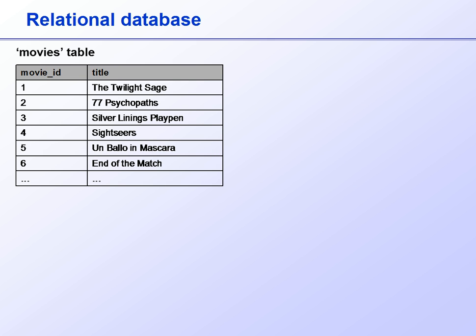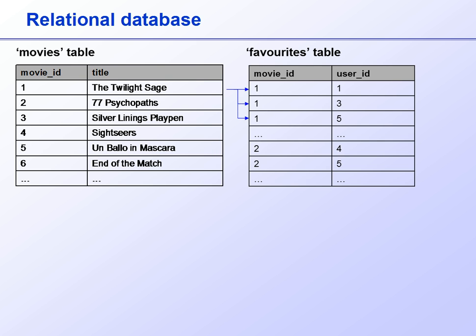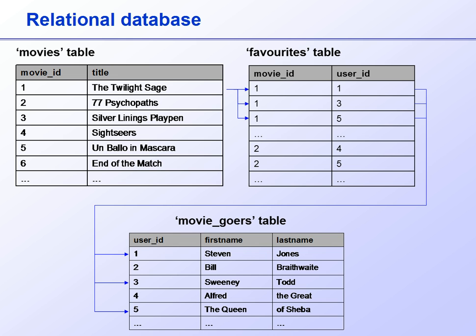The proper way to do it is to create a linking table consisting just of the ID numbers from each of the two tables to be linked. In this example, we want to store moviegoers who like particular movies. We take the movie IDs and user IDs, which link the movies and the moviegoers, and store these in a new table called favourites.